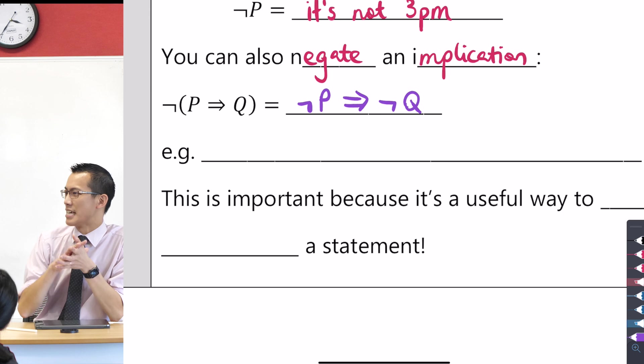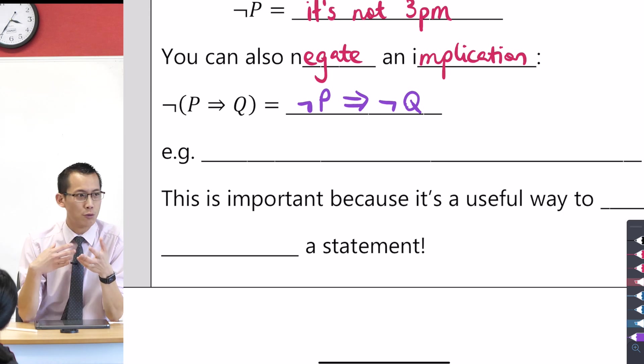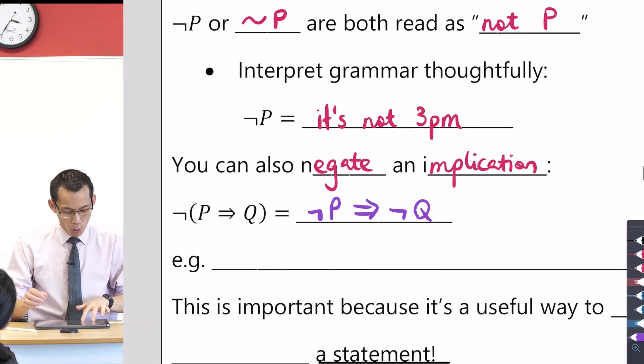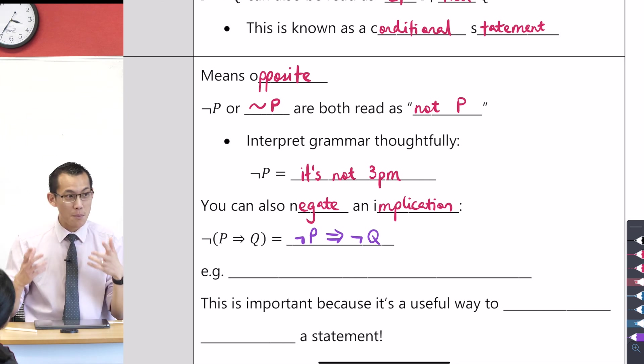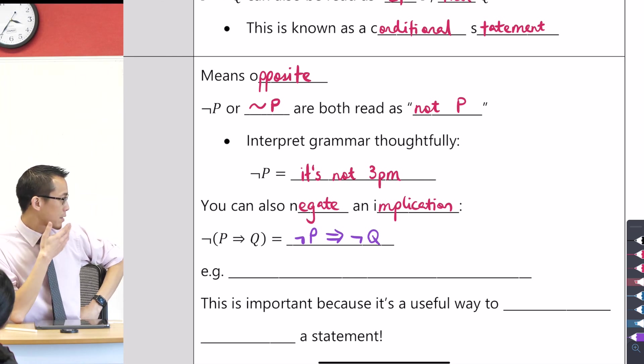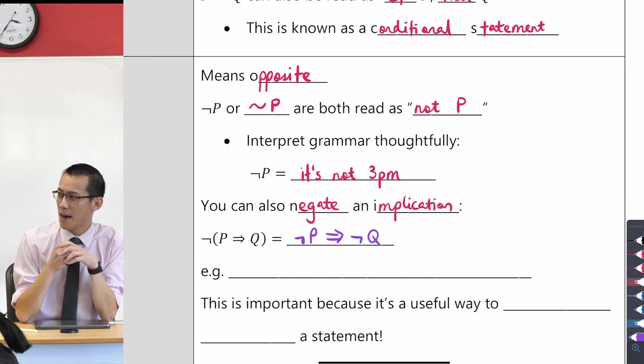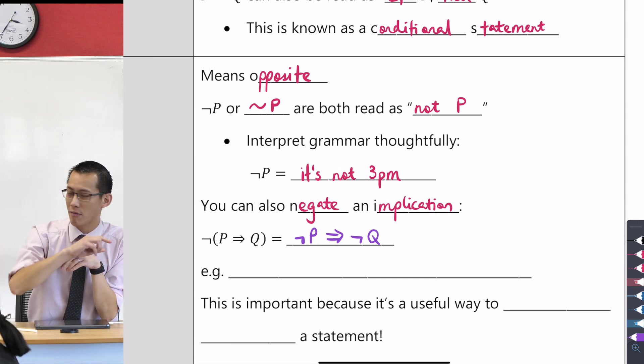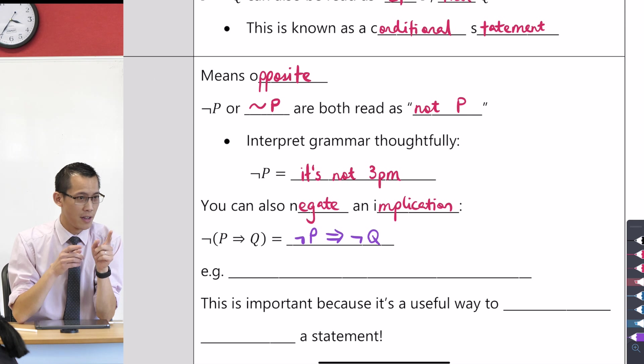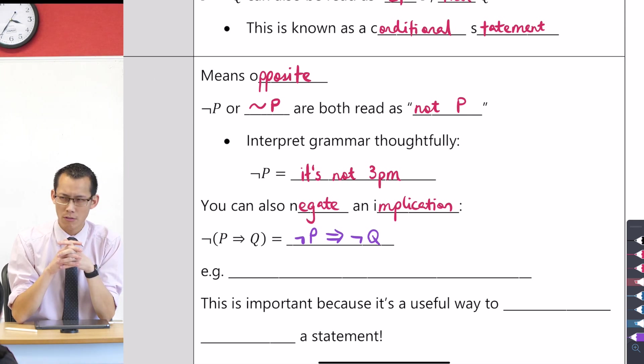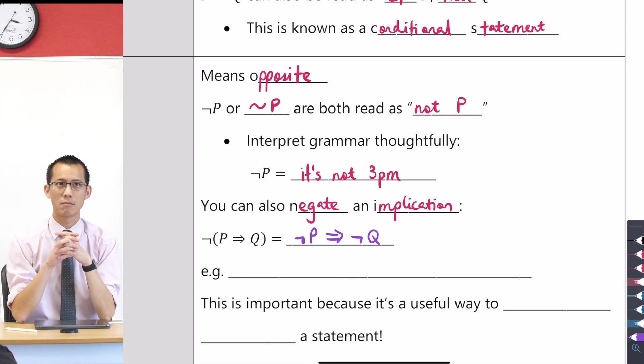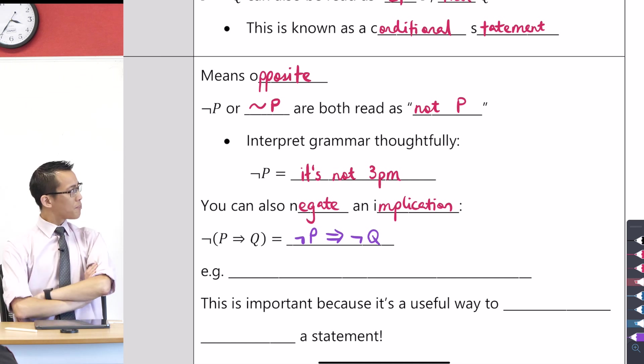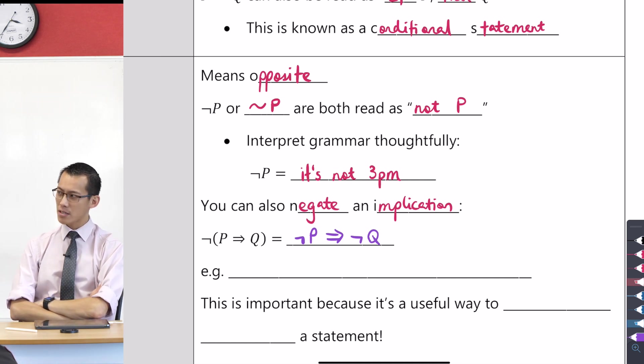Now, let's try and turn that into English and see if it is a meaningful negation, because remember, you all wrote up above, a negation means opposite. Not P implies not Q. That means if it's not 3pm, then the bell will not ring. Is that the opposite of P implies Q?